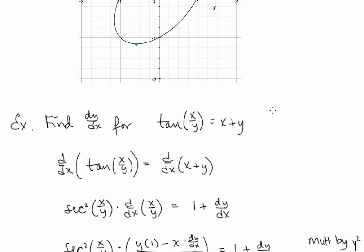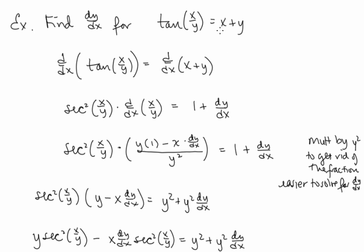Let's look at another: find dy/dx for tan(x/y) = x + y. Again we take the derivative with respect to x of both sides. The derivative of tan of something is secant squared of that something times the derivative of the inside function — here using the chain rule. On the right side we have 1 + dy/dx. So we have sec²(x/y) times the derivative of x/y, using the quotient rule: bottom times derivative of top minus top times derivative of bottom, over bottom squared.